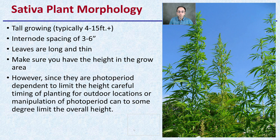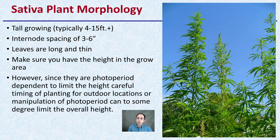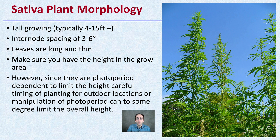The morphology of sativa strains is typically very tall growing — 14 to 15 feet tall. Their internode spacing is about three to six inches, and their leaves would be very long and thin compared to some of the other strains. Make sure you have the height to grow in the area if you are planning on growing a sativa strain. However, they are also photoperiod dependent, which can limit their height. Careful timing and planting for outdoor locations, or manipulation of photoperiod for indoor locations, can to some degree limit their overall height.